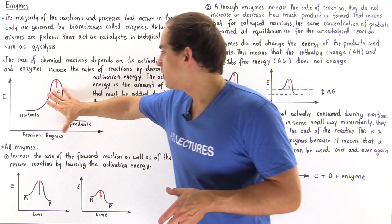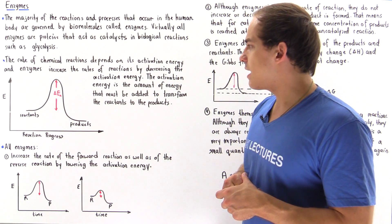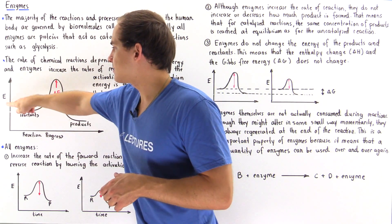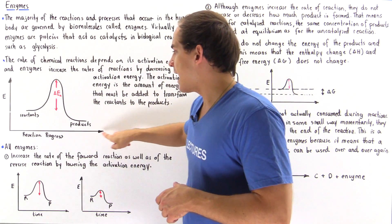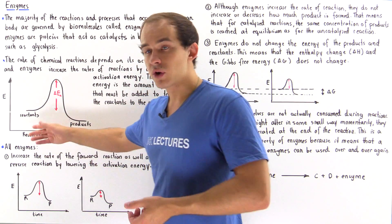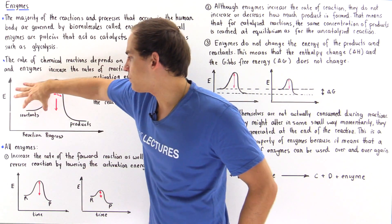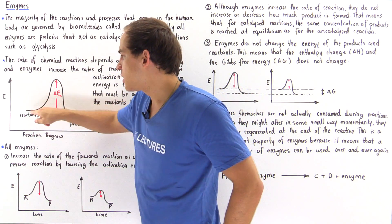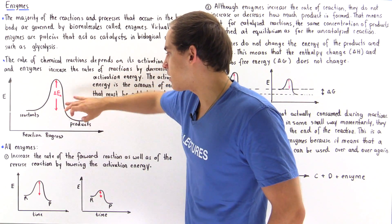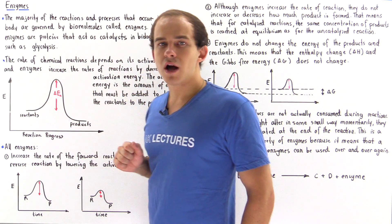Let's take a look at the following diagram. The y-axis is the energy, the x-axis is the reaction progress — the time. We have the reactants and this is the energy of the reactants. We have the products, and this is the energy of the products.